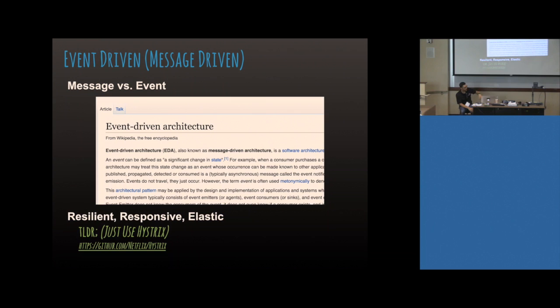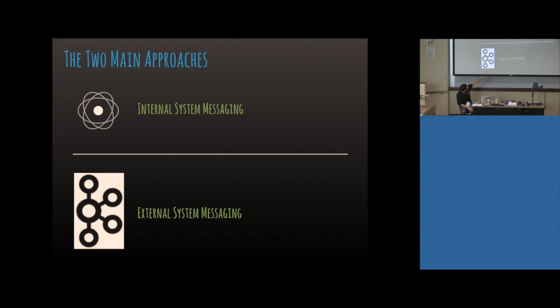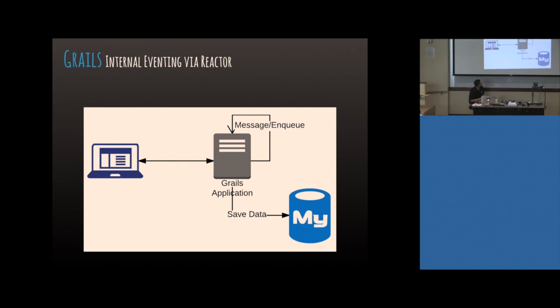So the two main approaches are internal eventing through Reactor and external system messaging. For internal eventing, our application enqueues a message internally and just processes the thing. For example, say we have a user — we just tell the user we're going to save them, then we send a 'save user' message and asynchronously save them into MySQL.